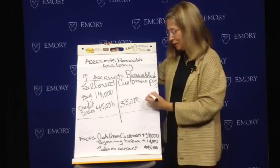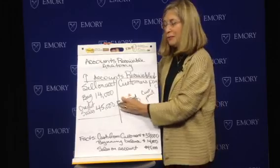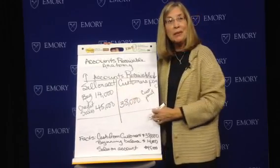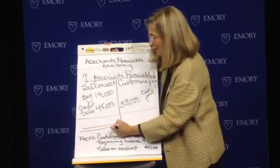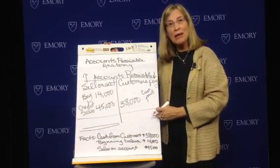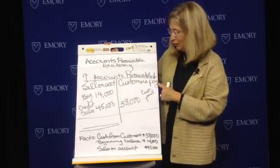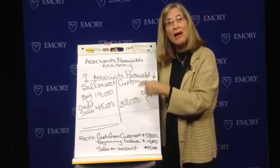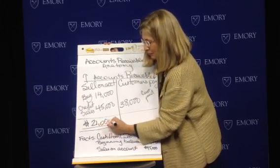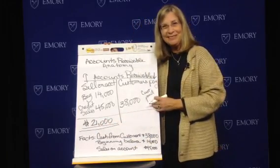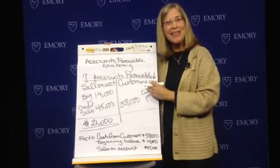So if these are our only facts — that the customers paid, that we had sales, and we have a beginning balance — what's the missing number? You're right, it's the ending balance. What we do is add up the debit side, subtract the credit side of $38,000, and we find the difference is $21,000. Is that what you got? So this is the brief history of the anatomy of accounts receivable. Thank you.